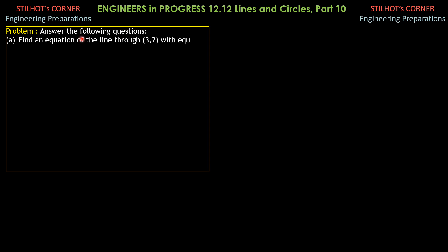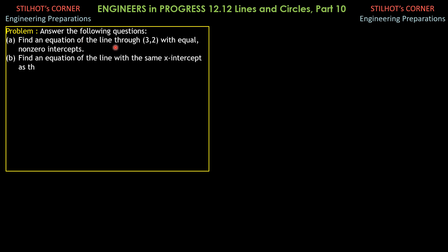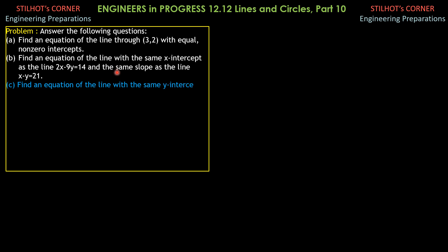Answer the following questions. First, find an equation of the line through (3,2) with equal non-zero intercepts. Then B, find an equation of the line with the same x-intercept as the line 2x minus 9y equals 14 and the same slope as the line x minus y equals 21.